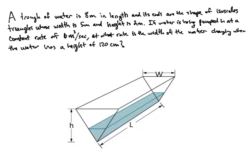It says a trough of water is 8 meters in length and its ends are in the shape of isosceles triangles whose width is 5 meters and whose height is 2 meters. If water is being pumped in at a constant rate of 6 cubic meters per second, at what rate is the width of the water changing when the water has a height of 120 centimeters?